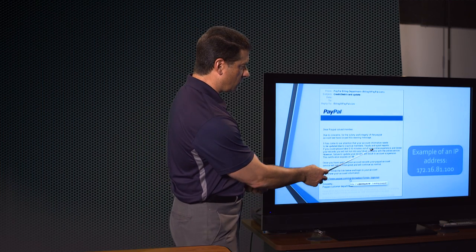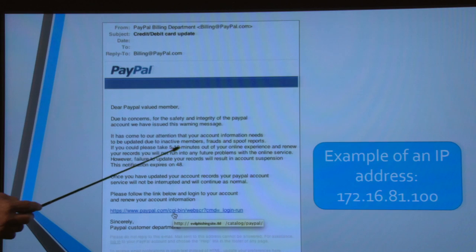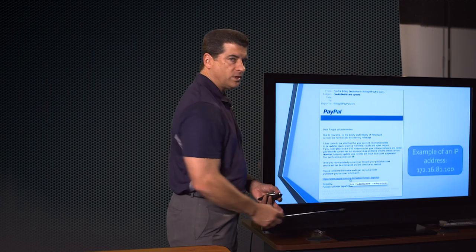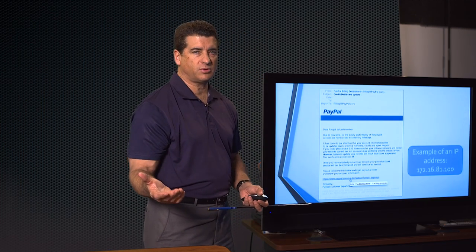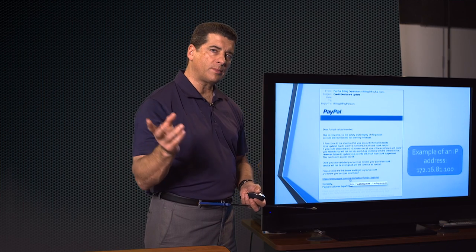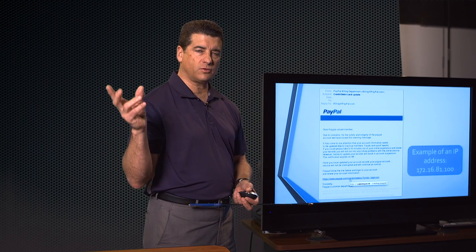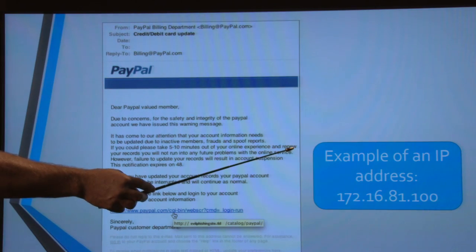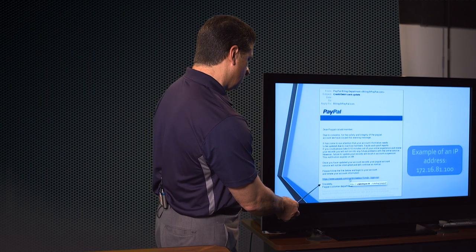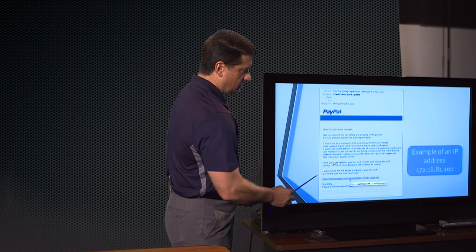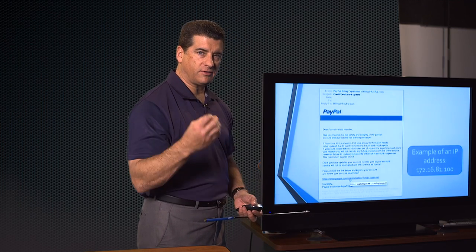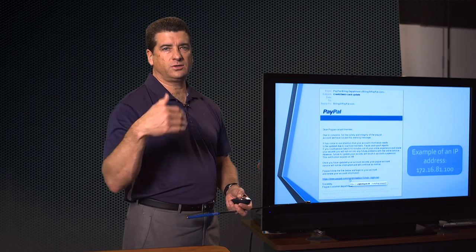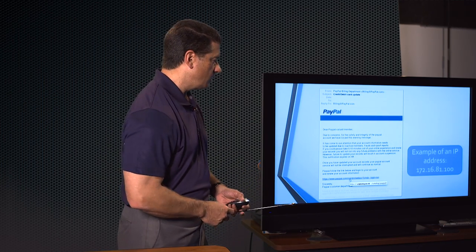Another issue here is the word wrapping problem again. Some sentences go all the way to the end and some do not. If you're using a normal email generation program or Microsoft Word, word wrapping is automatic — if there's enough room to put the word, it will. Also there's the warning: 'you have 48 hours.' They're always going to threaten that if you don't take action in a certain amount of time, your account will be closed or locked. None of that is true.